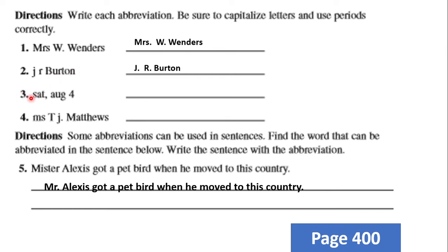Number three: SAT. The days of the week are abbreviated. It is abbreviated as SAT, but something is missing — it is not capitalized. We have to capitalize the S and end it with a period. Also, capital A, G dot — never forget capitalizing the first letter and ending with a period.